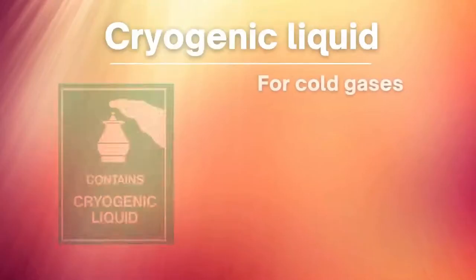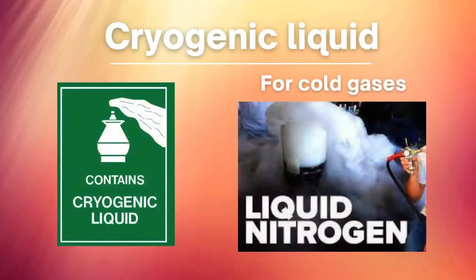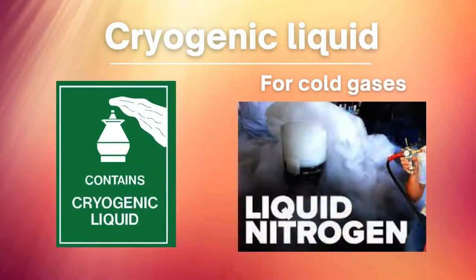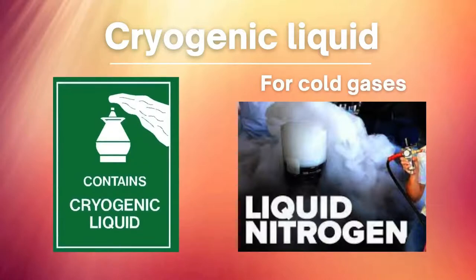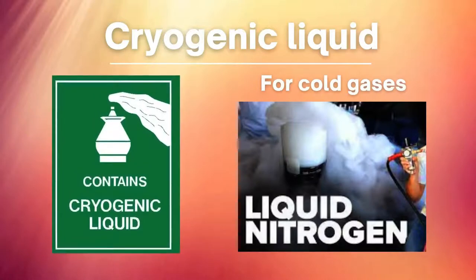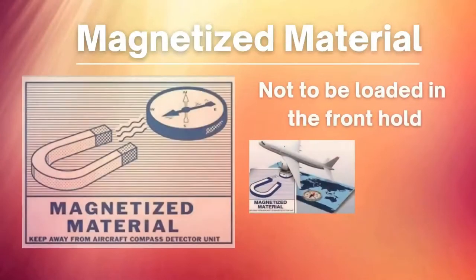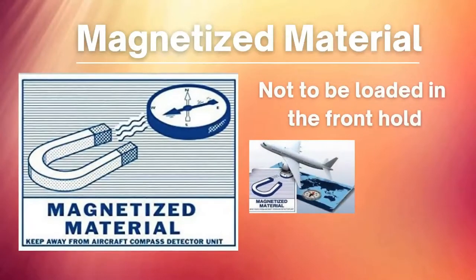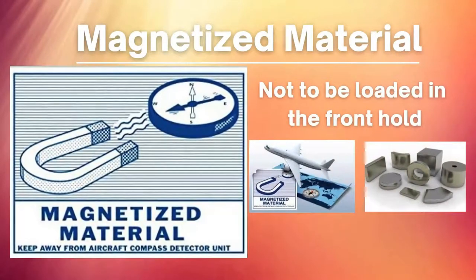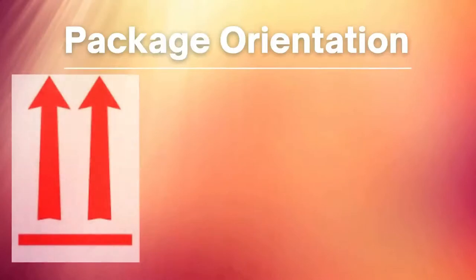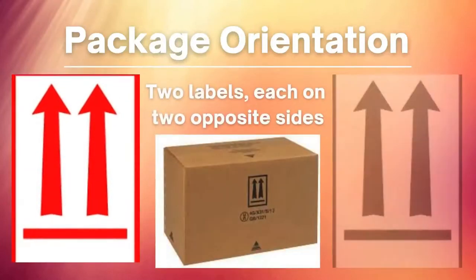This one is the Liquid label. It is used for cold gaseous treatment. This one is the Magnetized Material label. It indicates that this package will not be loaded in the front hold of the aircraft.